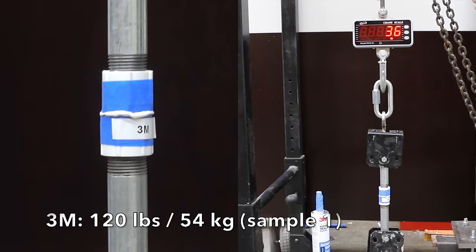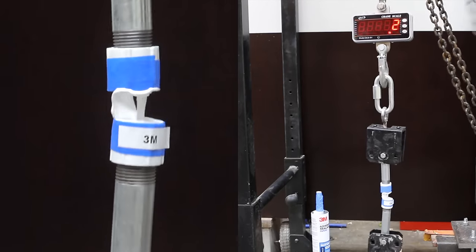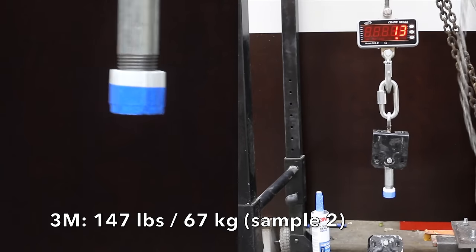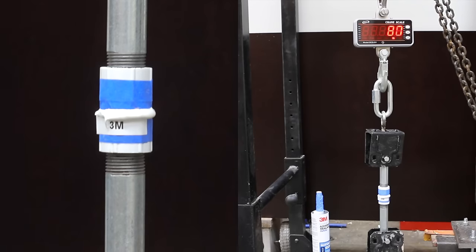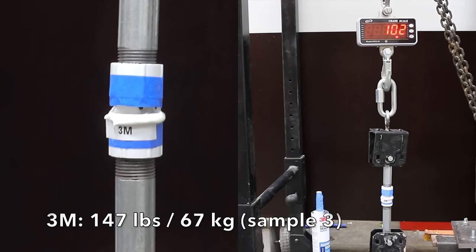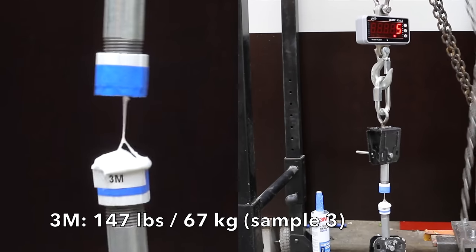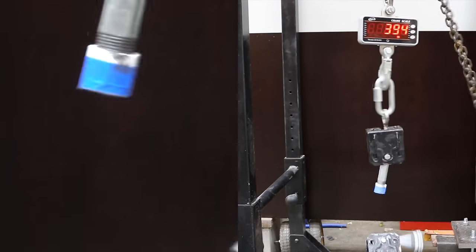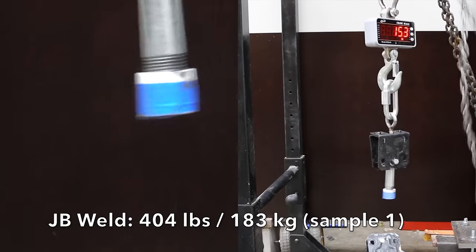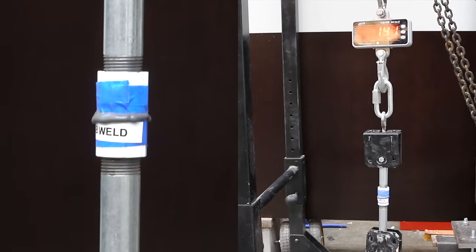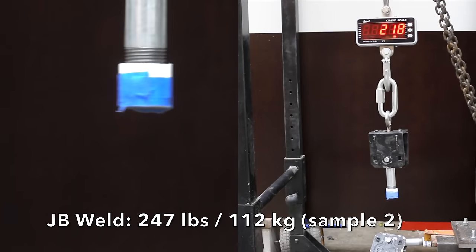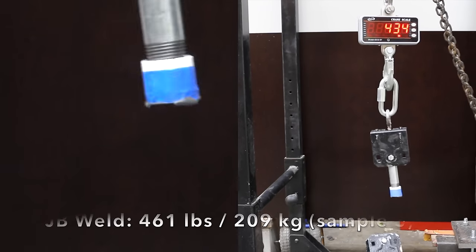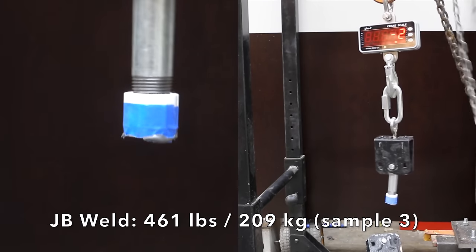Can 3M do any better? The first was only 120. The second was up a little to 147. And the third remained the same at 147. Just how well can JB Weld stick to a smooth surface? The first was 404 pounds. Wow! The second was 247. The third was up quite a bit to 461. Very impressive.